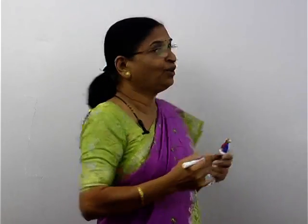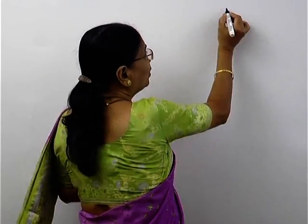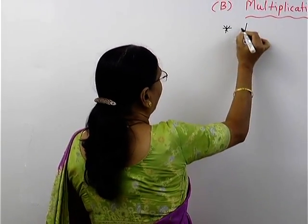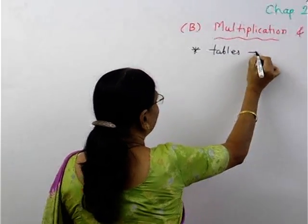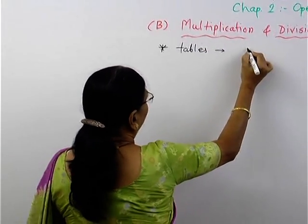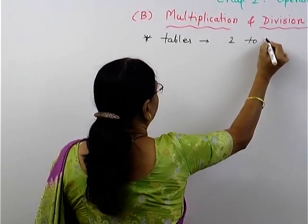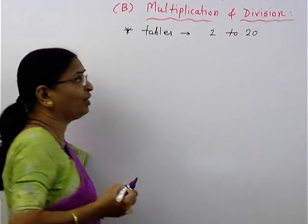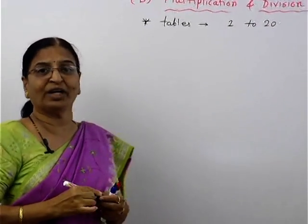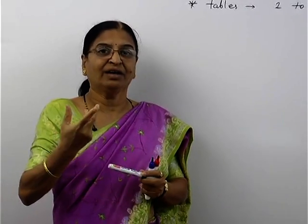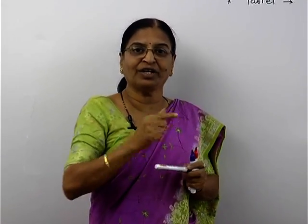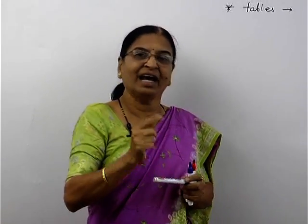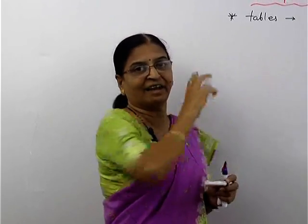The first thing you want is to make the tables by heart — from 2 to 20. Once you know the tables of 2 to 20, the next part is also the divisors. For that also, it is advisable to know the tables.